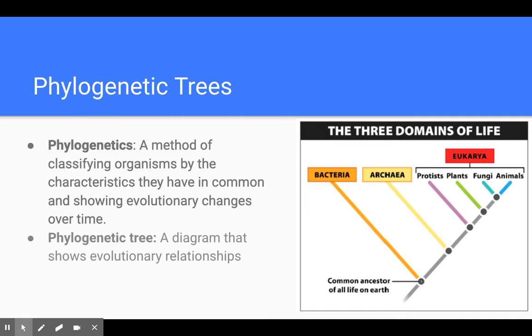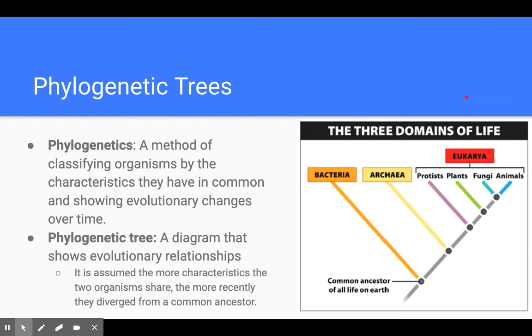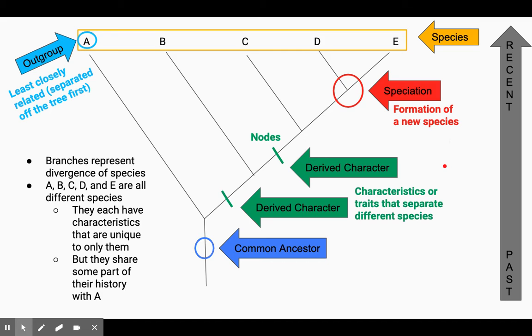So phylogenetic trees help us to see these evolutionary relationships between organisms. So I'm going to show you typically what a phylogenetic tree looks like, and there's a lot on this slide. So the first thing are these, what we call branches.